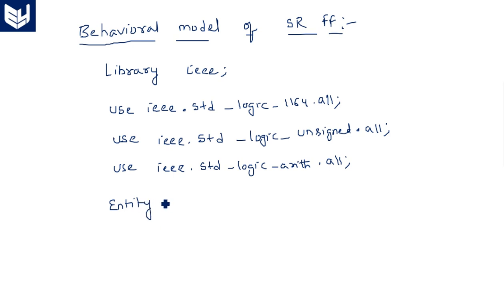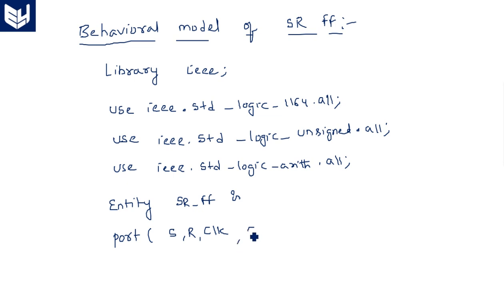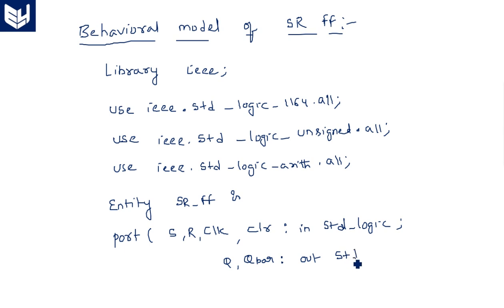Now coming to the main part where we introduce the inputs and outputs. Entity SR_flip_flop is port — the inputs for the flip-flop are S, R, clock, and also a clear input, all in std_logic. The outputs are Q and Q_bar, both out std_logic. End entity SR_flip_flop.